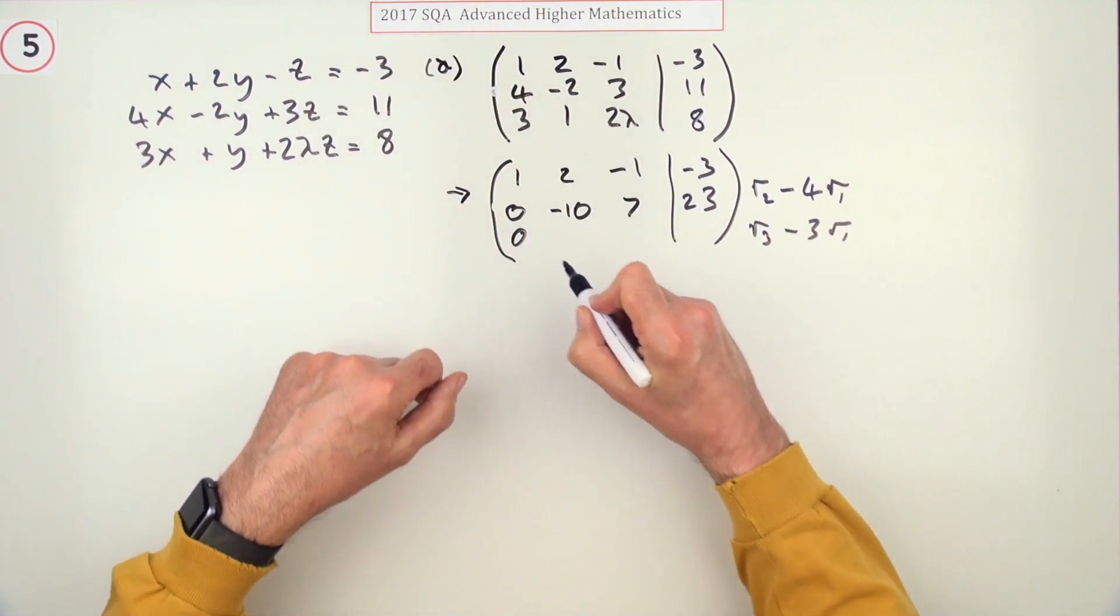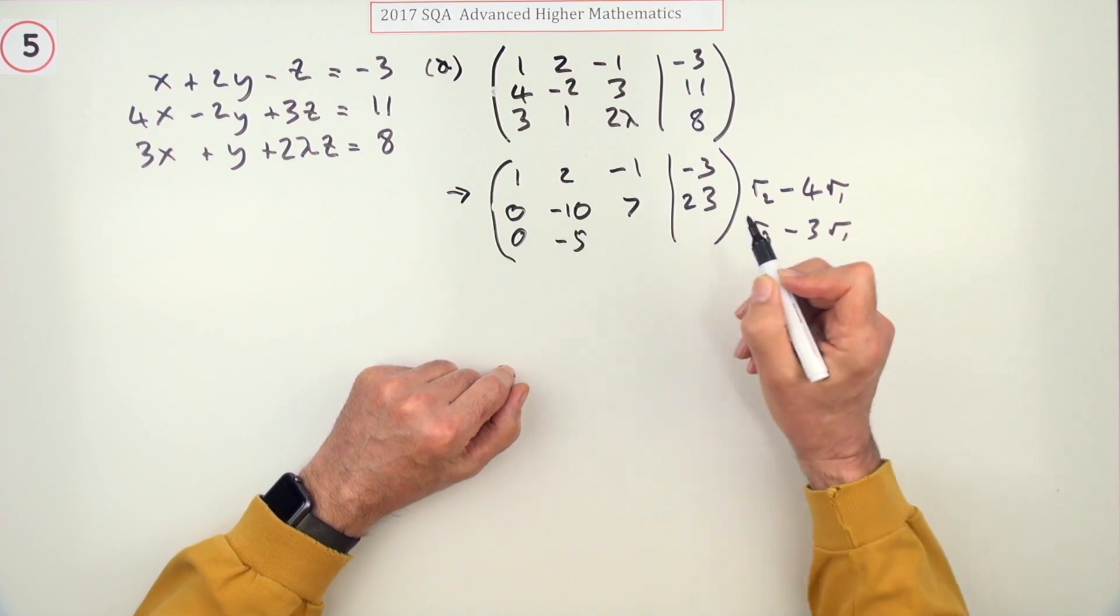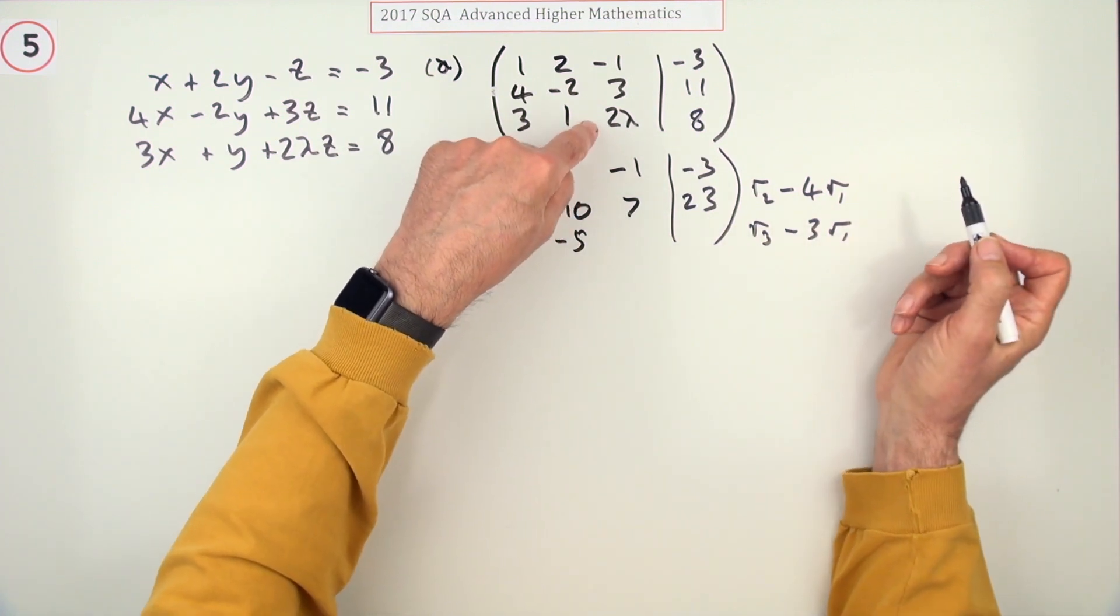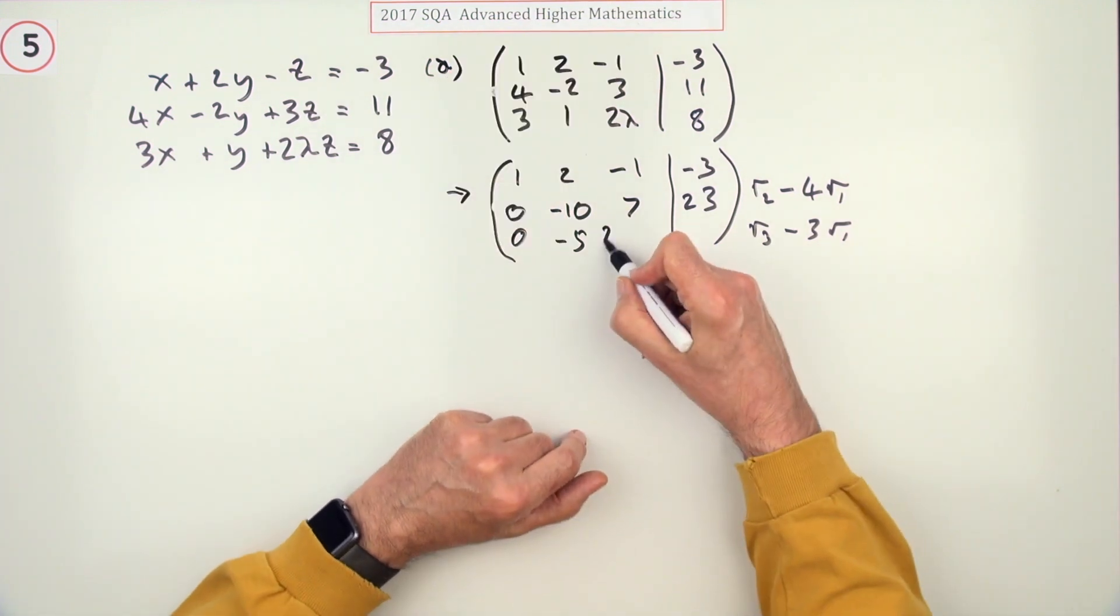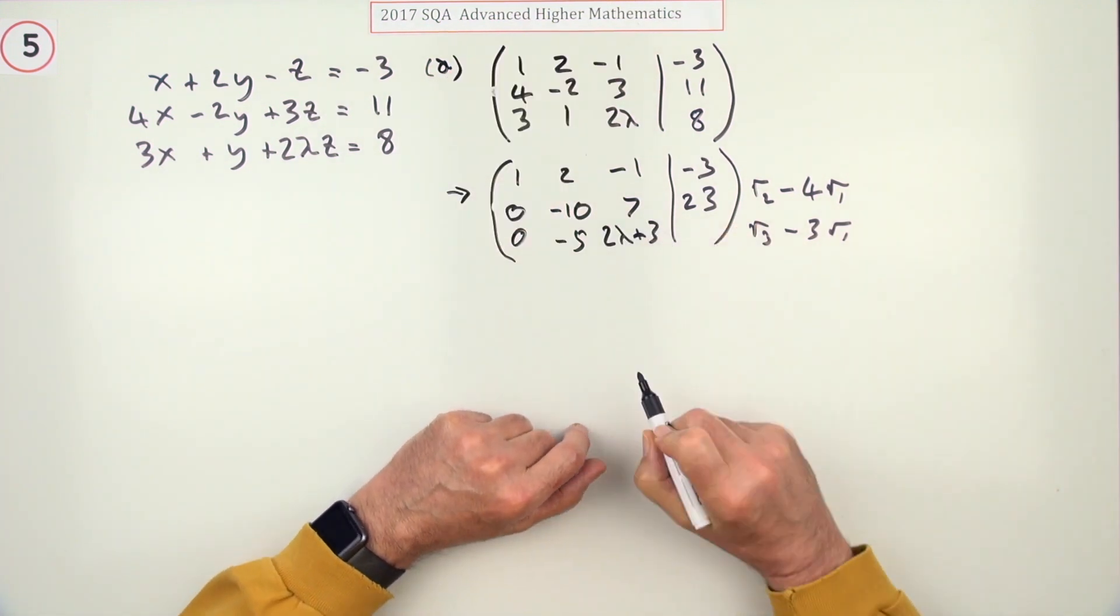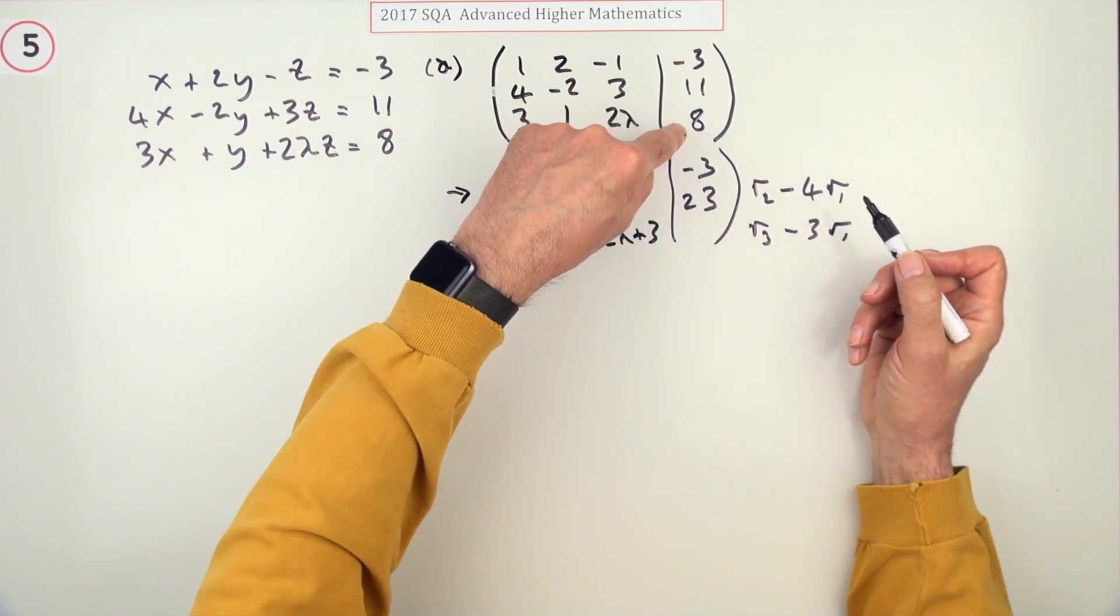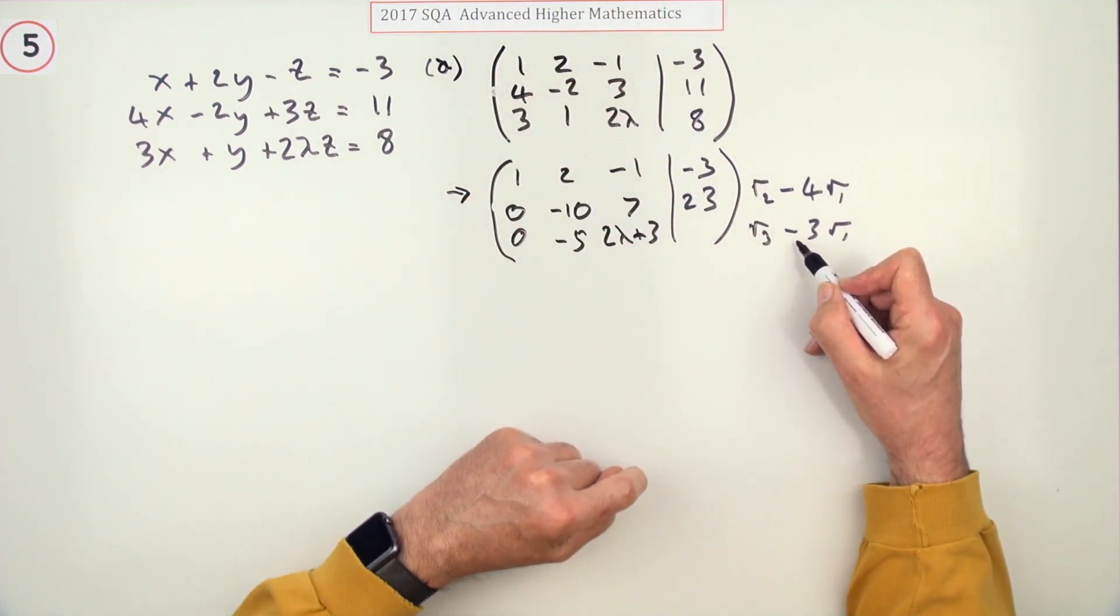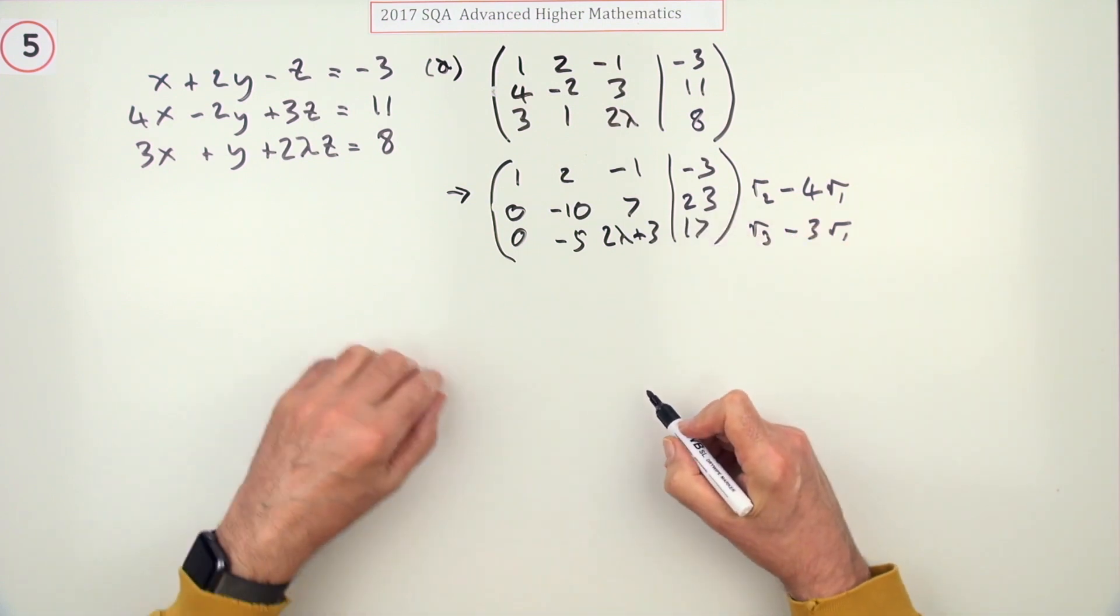So I'll be 3 take away 3 is 0. 1 take away 6 will be negative 5. And of course I can't do much with this one. It's going to be 2 lambda plus 3. That's why I needed more room. And that's going to be 8 plus 9, so that gives you a 17. You don't like the look of those numbers at all.